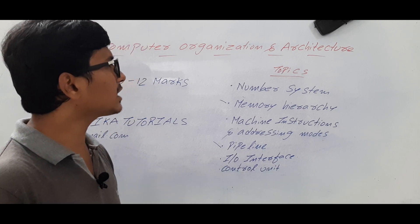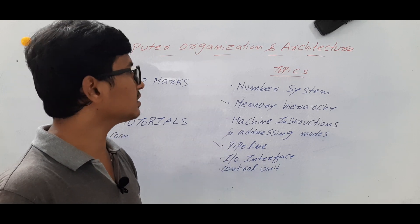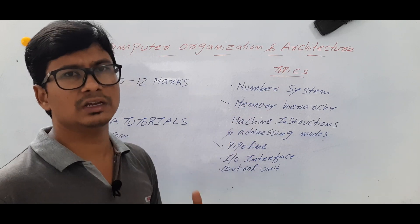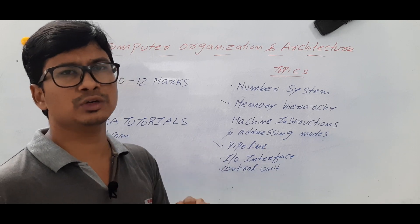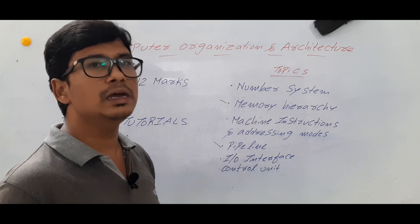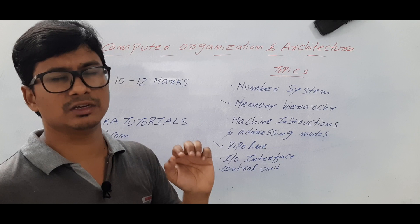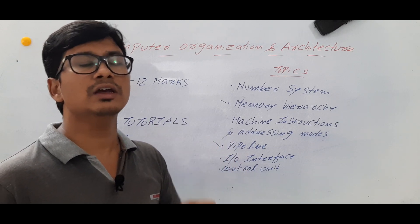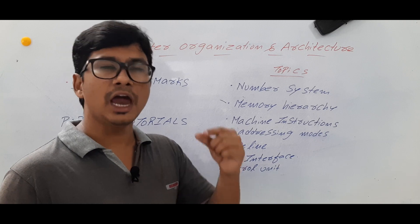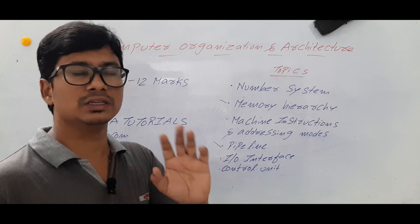You may ask how this playlist is different from others on Computer Organization and Architecture. My approach is: I take a concept — say the number system — discuss all conversions like binary to hexadecimal and hexadecimal to octal, then I discuss GATE previous year questions related to those concepts. First you understand the concept with examples, then by seeing GATE questions you understand the complexity and what kind of questions they ask.